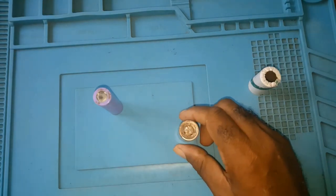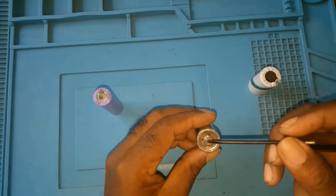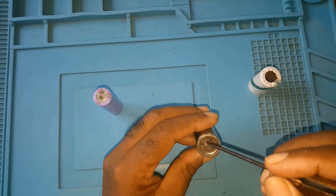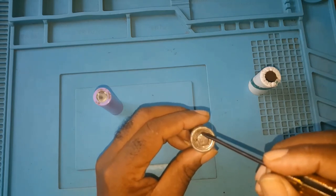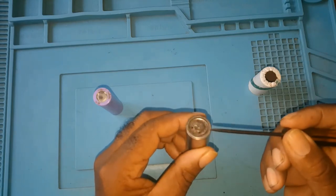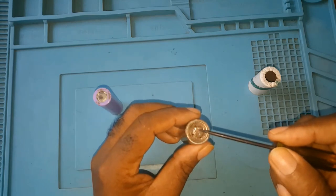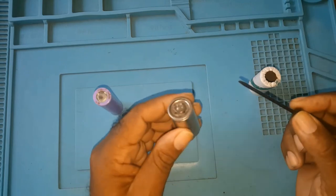But when you're tampering with these batteries, this portion here is positive, this portion here is negative. If you bridge here and here, you'll get a spark.